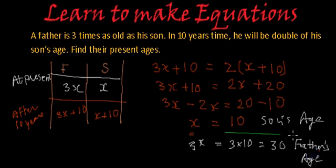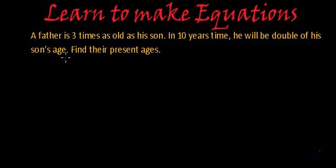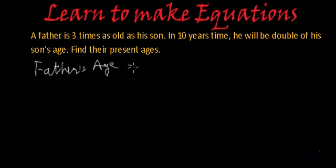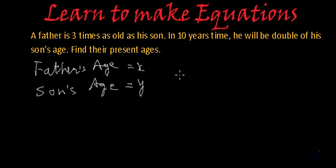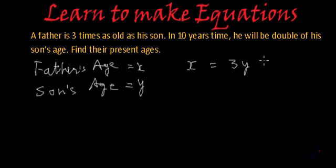So son is 10 years old and father is 30 years old. Now we will solve it using two variables. Let's assume father's age as x and son's age as y. At present, father is 3 times as old as his son, so x equals 3y. This is equation number 1.